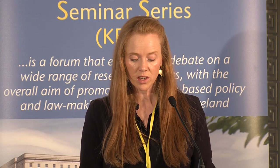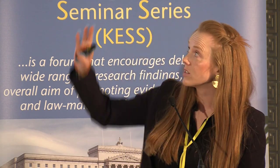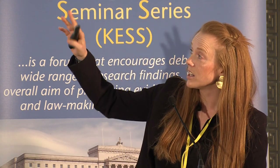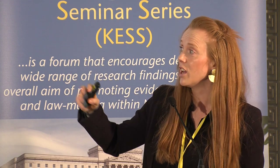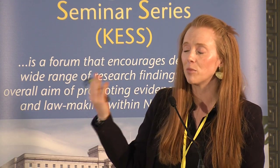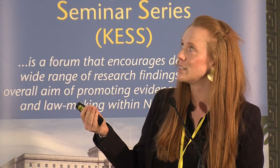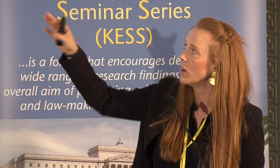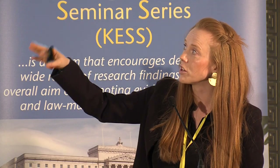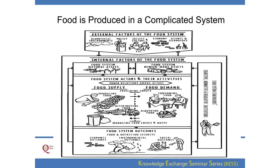The food system is very complicated, obviously. We have lots of external factors here, so this diagram is just a very brief illustration of the complicated nature of the system. External factors at the top, many internal factors from human-made issues, natural issues, supply with production and demand and consumption, distribution losses — there's an awful lot going on in the food system.